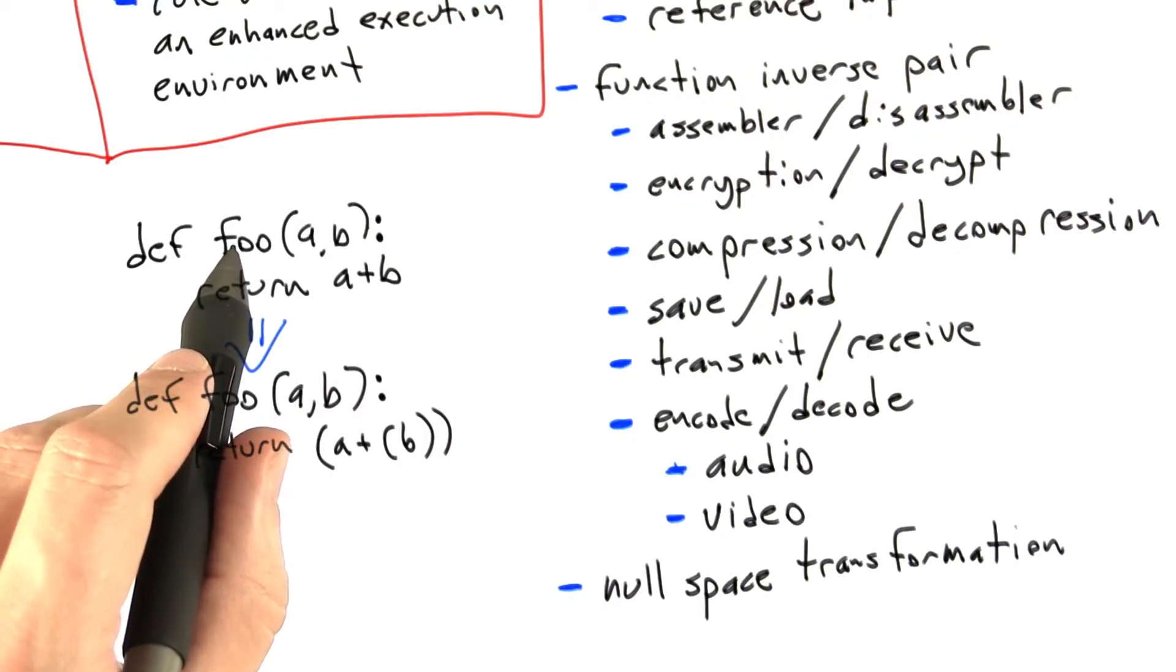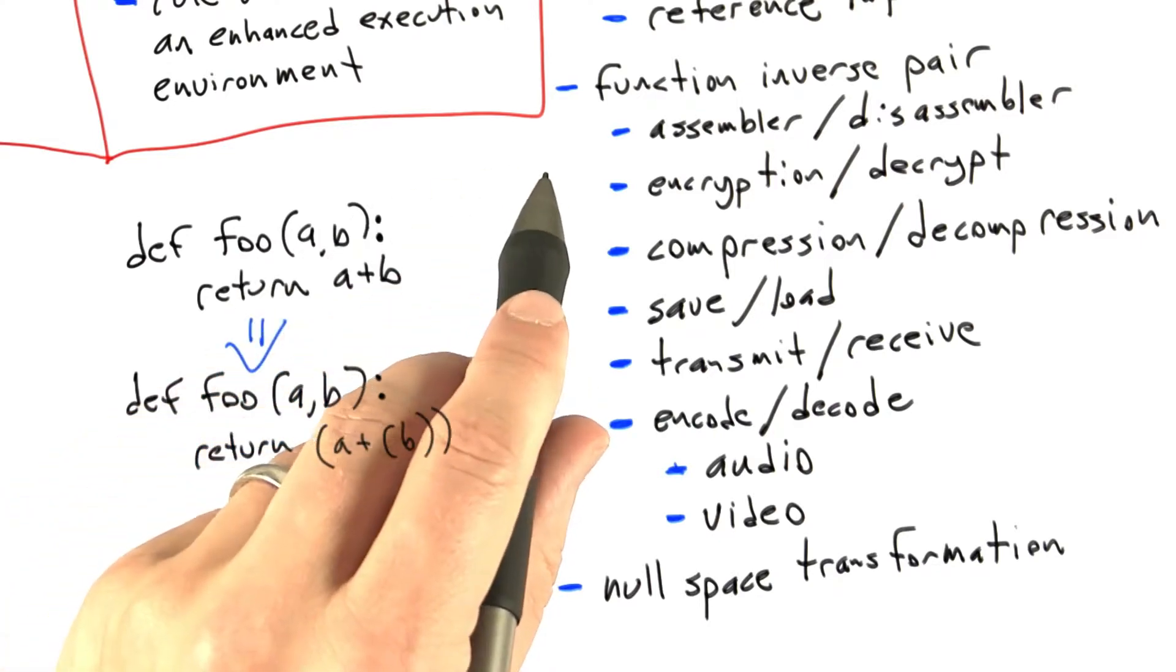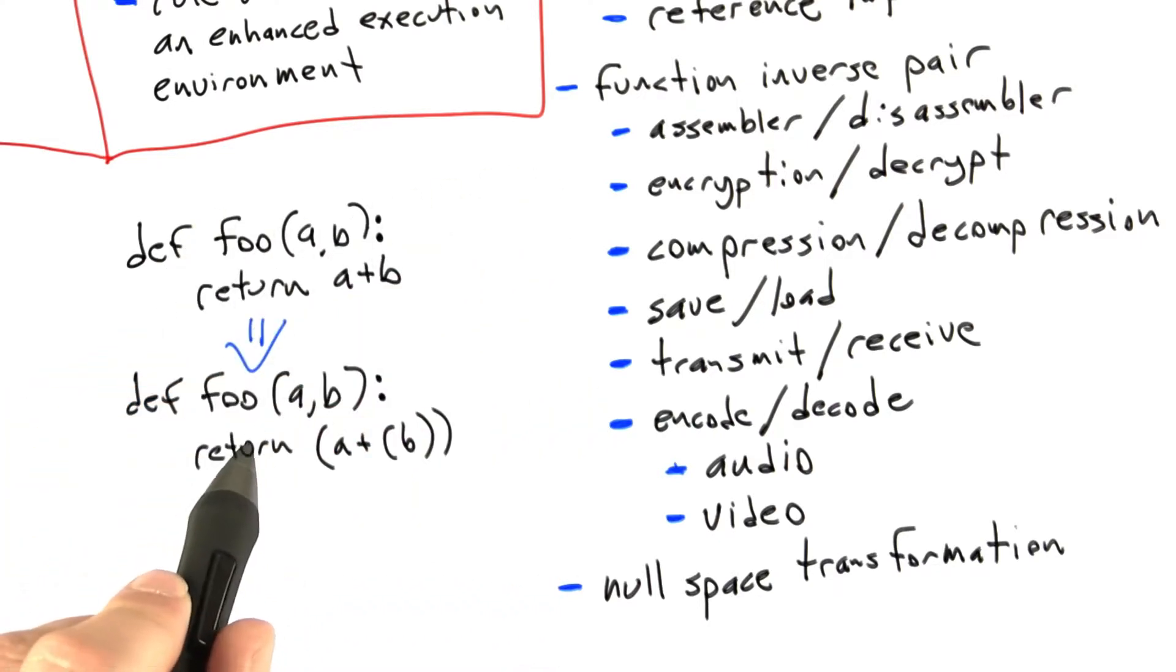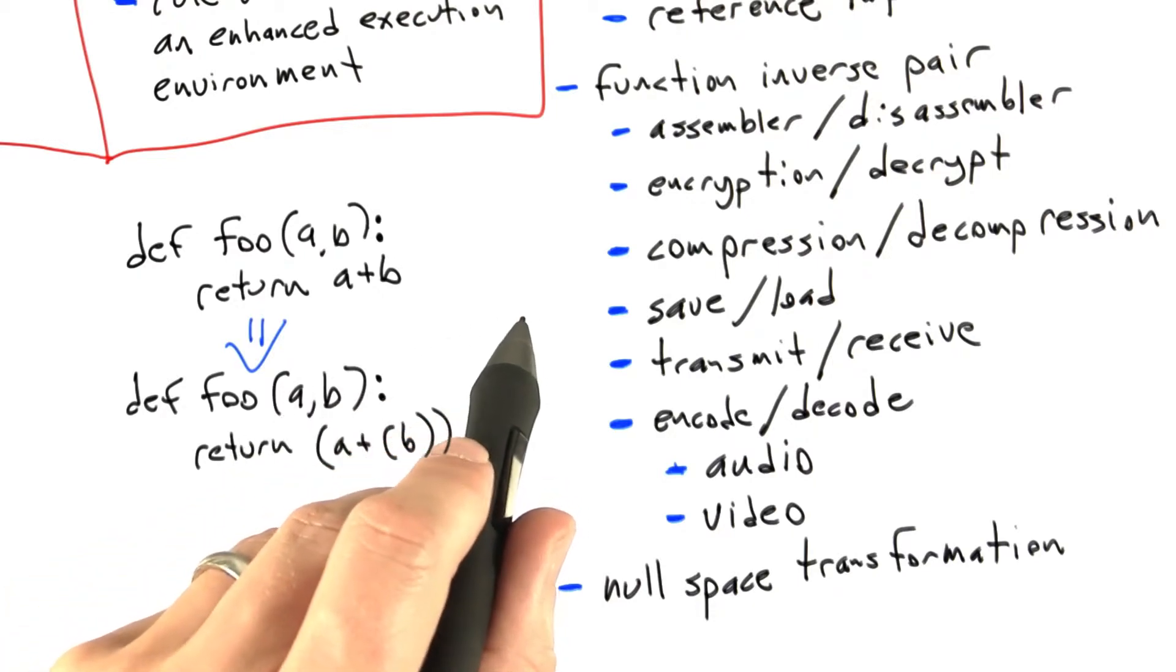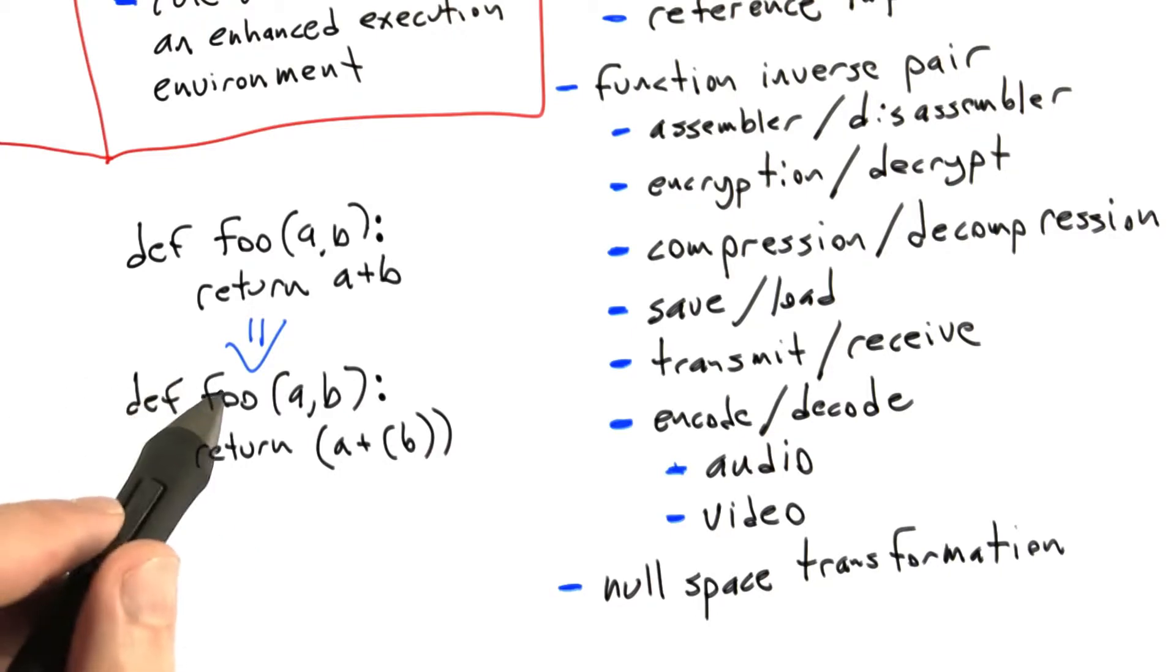So now we can do something very much like differential testing. Instead of taking the same program and running it through two implementations of Python, we're going to take two programs which are semantically identical and run it through the same implementation of Python. And if that implementation of Python treats this differently, that is to say it interprets this code in such a way that it returns some different answer, then we found a bug in it.